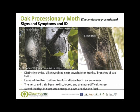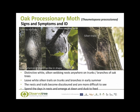When the caterpillars reach a certain stage of development they begin to build distinctive white silken webbing nests on the trunks and branches of oak trees. They are almost never woven amongst the leaves. They are usually roughly semi-spherical or teardrop in shape and can be seen between June and mid-July. When there are very heavy infestations, nests can merge to create very large super nests. The caterpillars tend to spend most of their time in the nests and come out at dawn and dusk to feed. They can also leave white silken trails on the trunks and branches of oak trees in early summer. The nests and trails become discoloured after a short time, making them more difficult to see. Once finished with, they eventually collapse and spent nests can sometimes be seen on the ground beneath oak trees.